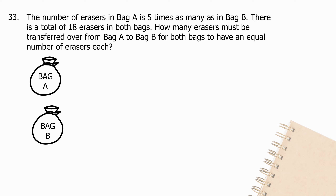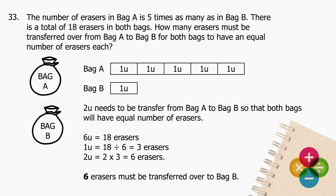Question 33: The number of erasers in bag A is 5 times as many as in bag B. There is a total of 18 erasers in both bags. How many erasers must be transferred from bag A to bag B for both bags to have equal numbers? There are 6 units total; 2 units must be transferred. 6 units = 18 erasers, so 1 unit = 18 ÷ 6 = 3. 2 units = 2 × 3 = 6. Six erasers must be transferred to bag B.